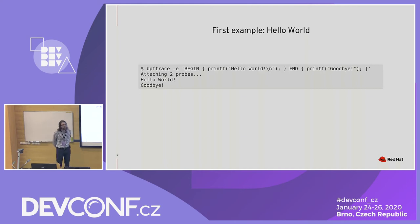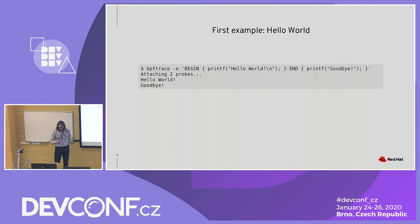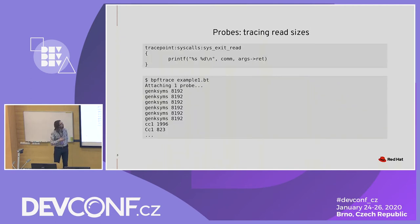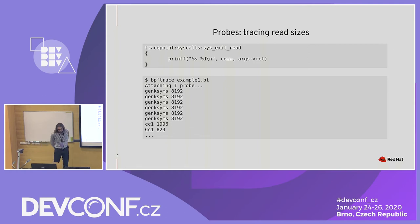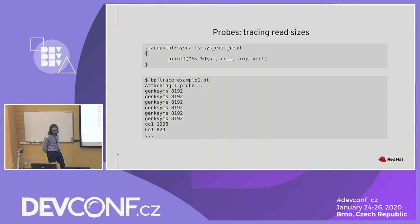There's also another way to do it. If you have a bigger script, you can just write it in a file and then run it with an argument to BPF trace. And if you want to, you could also use a shebang at the top and mark your file executable.